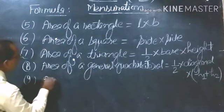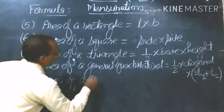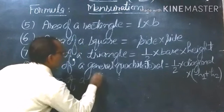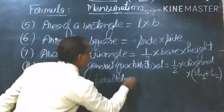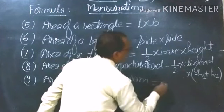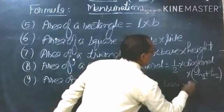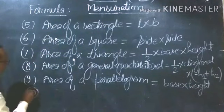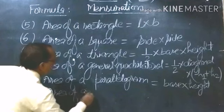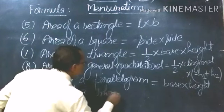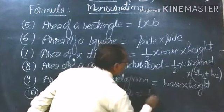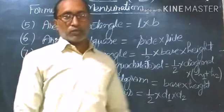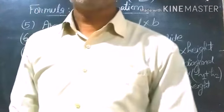Area of a parallelogram is equal to base × height. Area of a rhombus is equal to ½ × diagonal1 × diagonal2, meaning one-half the product of the diagonals.